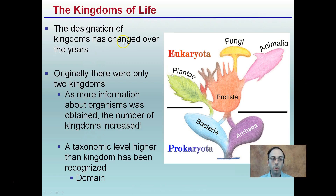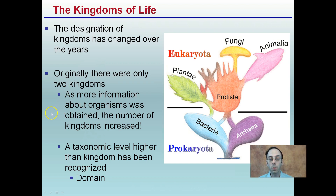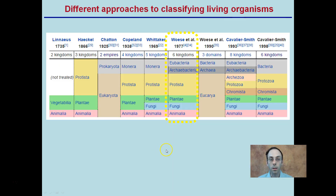The designation of kingdoms has changed over the years. We're going to focus on one particular system. Originally there were only two kingdoms, and as more organisms were obtained, the number of kingdoms increased. The taxonomic level higher than a kingdom has also been recognized — we call that the domain. That's a broader category or way to categorize things.